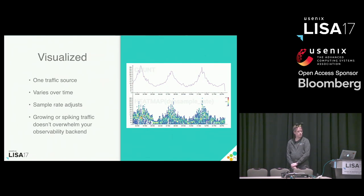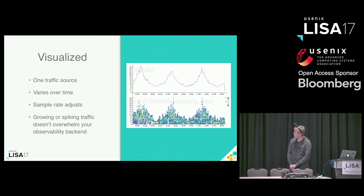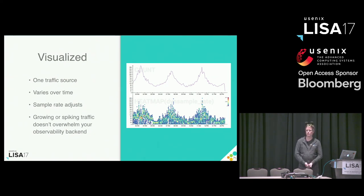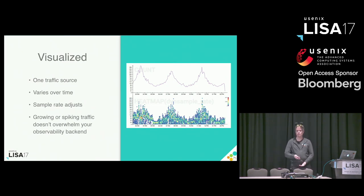Compared to three different sources of traffic being sampled at three different rates, this next example is one source of traffic that varies in volume over time. The top graph is the volume of traffic coming through; the bottom is the sample rate chosen. It illustrates this same idea of adapting your sample rate as you watch your traffic, to keep the volume going to your observability system low enough to scale it roughly logarithmically with your production infrastructure.